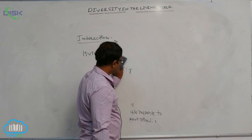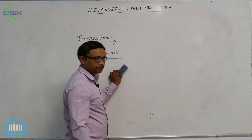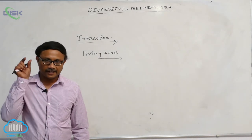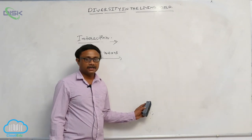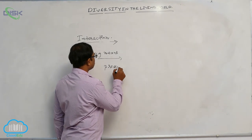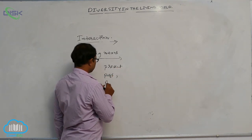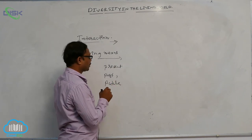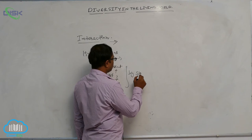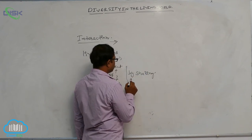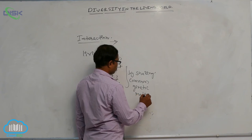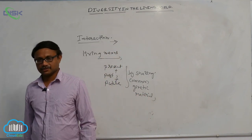All living organisms are linked to one another — present, past, and future — by sharing common genetic material, which is DNA, but with different degrees or values. So living organisms are linked by sharing common genetic material.